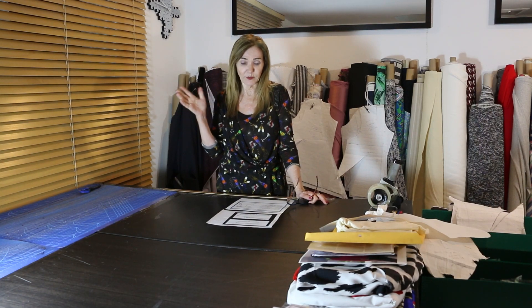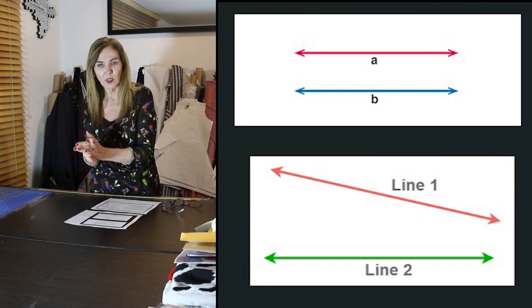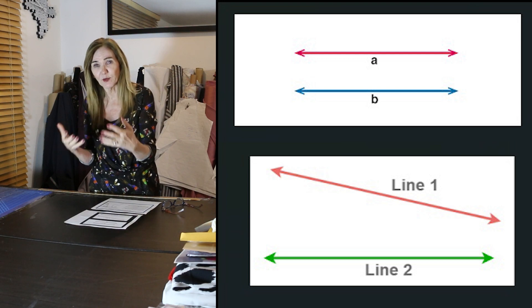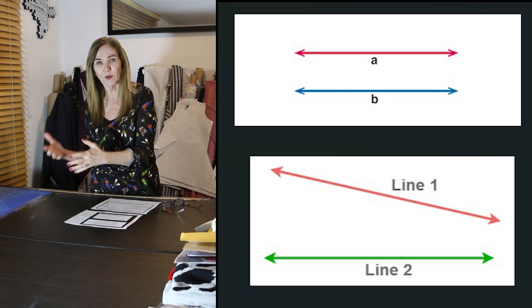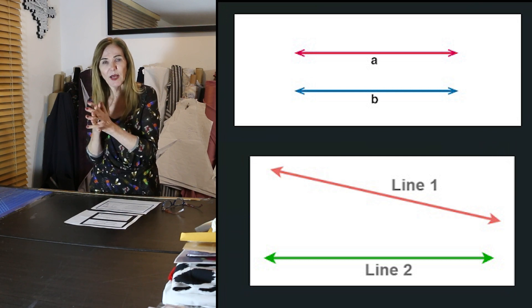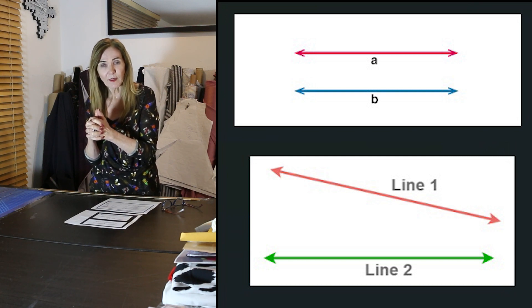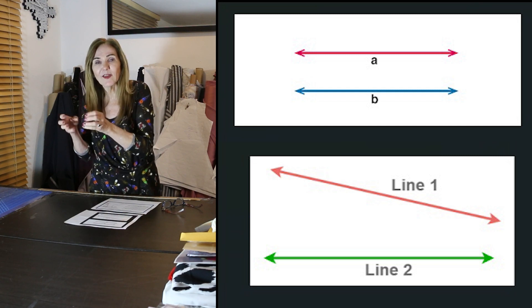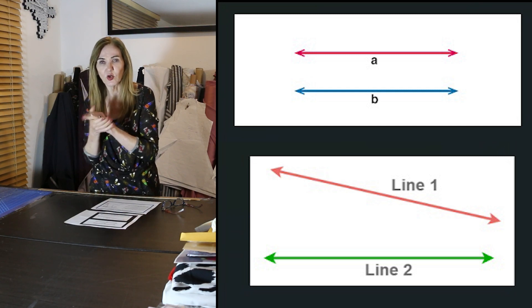The first thing we need to recognize in pattern making — well, not just pattern making, but in the world — there are two types of lines: they're either parallel or converging. In pattern making it's the same thing; we have two types of lines, converging or parallel. When we talk about depth, lines that are converging are depth lines. Those are the lines we utilize to control depth.